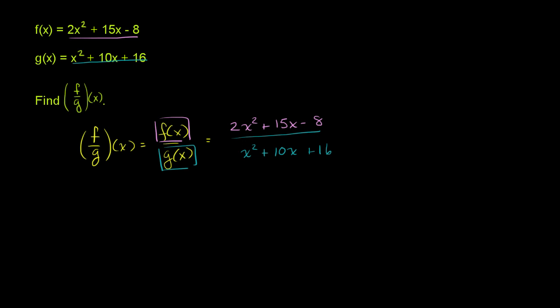Let's try to factor each of them. Looking at 2x squared plus 15x minus 8, we have a quadratic expression where the leading coefficient is not 1. One technique to factor this is to factor by grouping. When you factor by grouping, you split up the 15x into two terms whose coefficients, when multiplied, equal the product of the first and last coefficients.